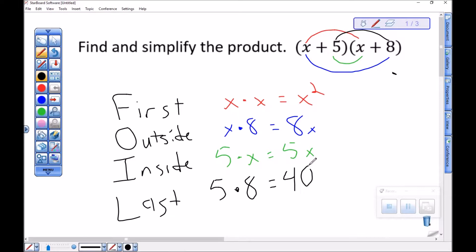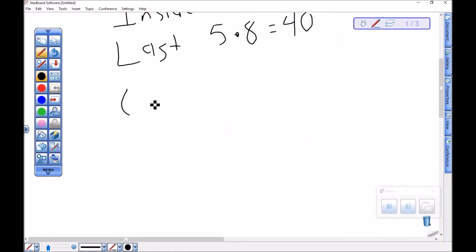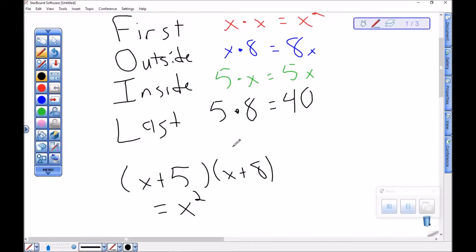So this product of x plus 5 times x plus 8 is these four guys. I've got x squared, was my first, and then plus 8x plus 5x and then plus 40.